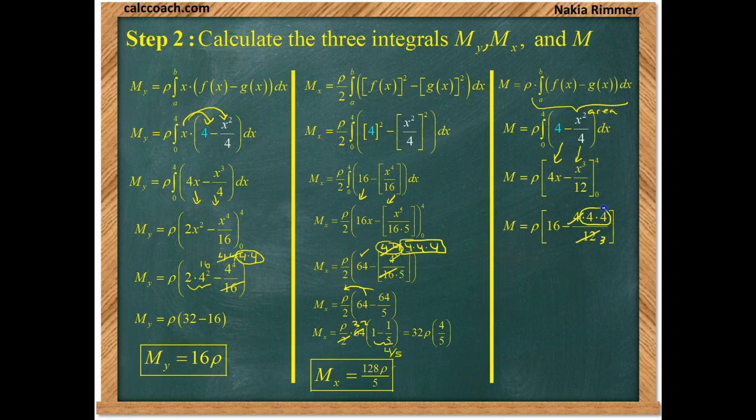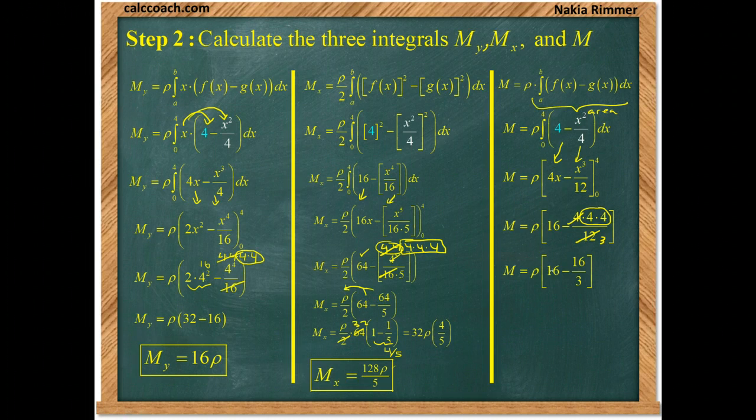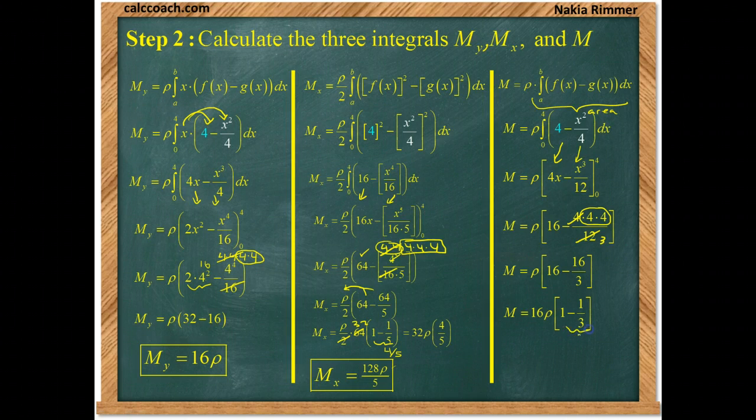These 2 guys that are left over give us 16. And once again, like we did in the previous calculation, please don't put these together. Let's take out the 16. And we'll be left with 1 minus 1 third, which is 2 thirds.